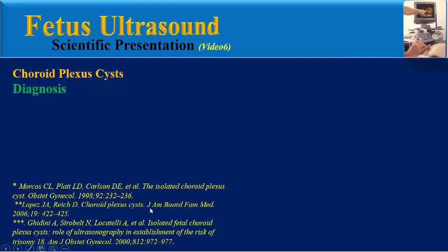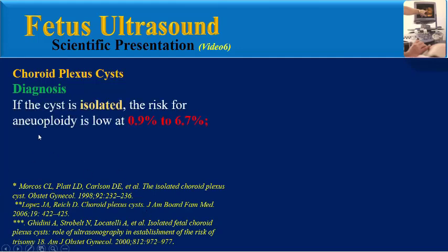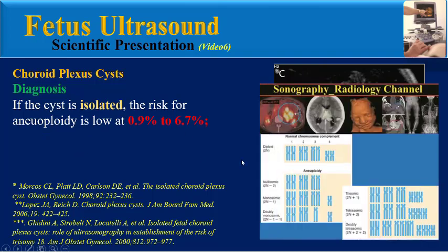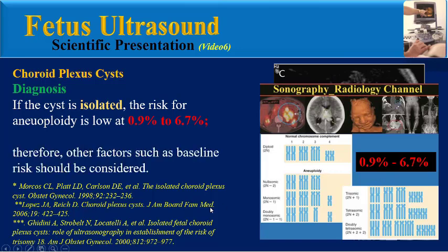According to many studies, if the cyst is isolated, the risk for aneuploidy is low at 0.9 to 6.7%. Therefore, other factors such as baseline risk should be considered.